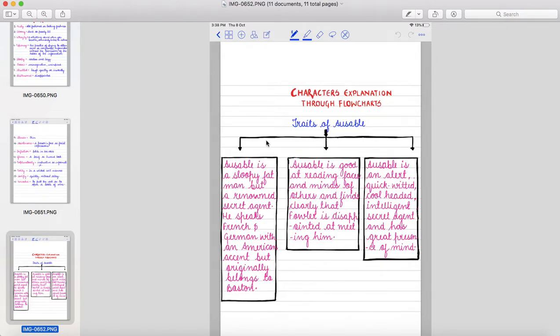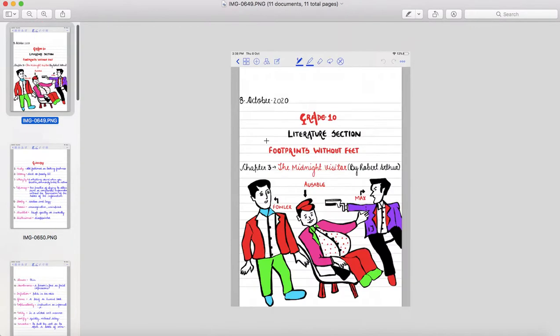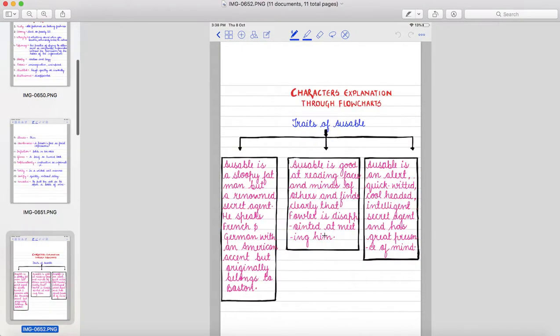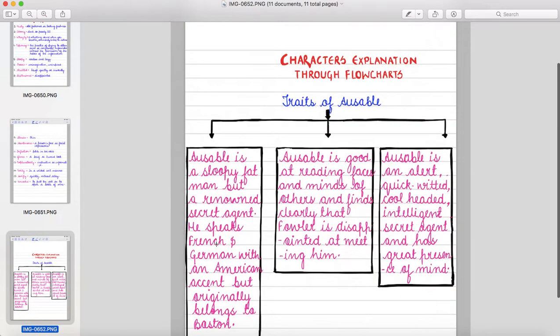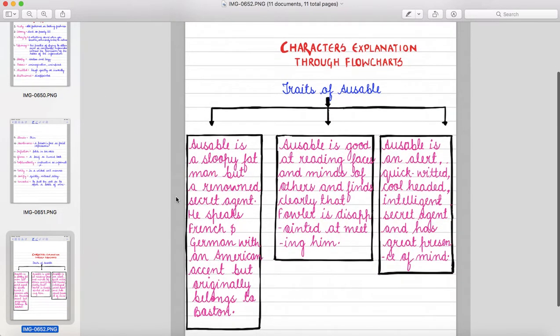So these are the traits of Ausable. Who is Ausable? Ausable is this person, this fat man. Okay? Ausable is a sloppy fat man but a renowned secret agent. He speaks French and German with an American accent but originally belongs to Boston.